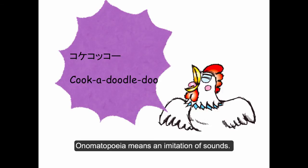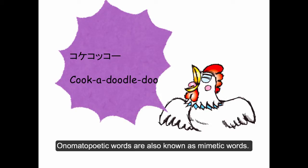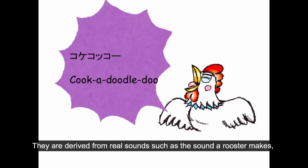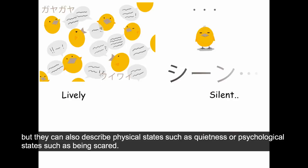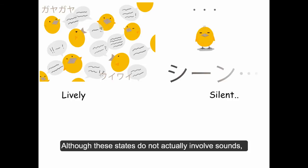Onomatopoeia means an imitation of sounds. Onomatopoetic words are also known as mimetic words. They are derived from real sounds such as the sound a rooster makes, but they can also describe physical states such as quietness or psychological states such as being scared.